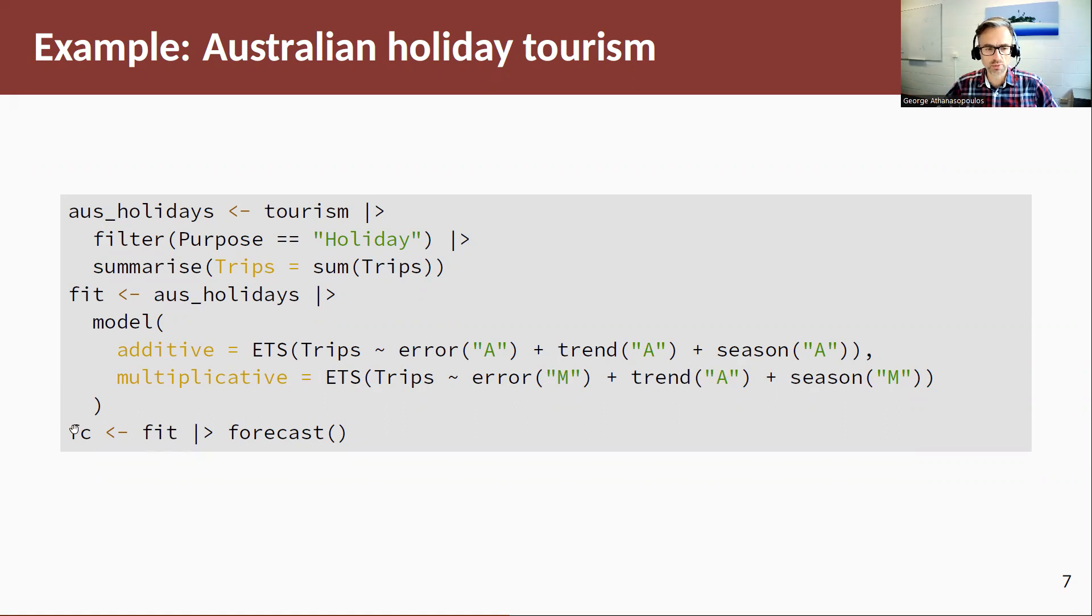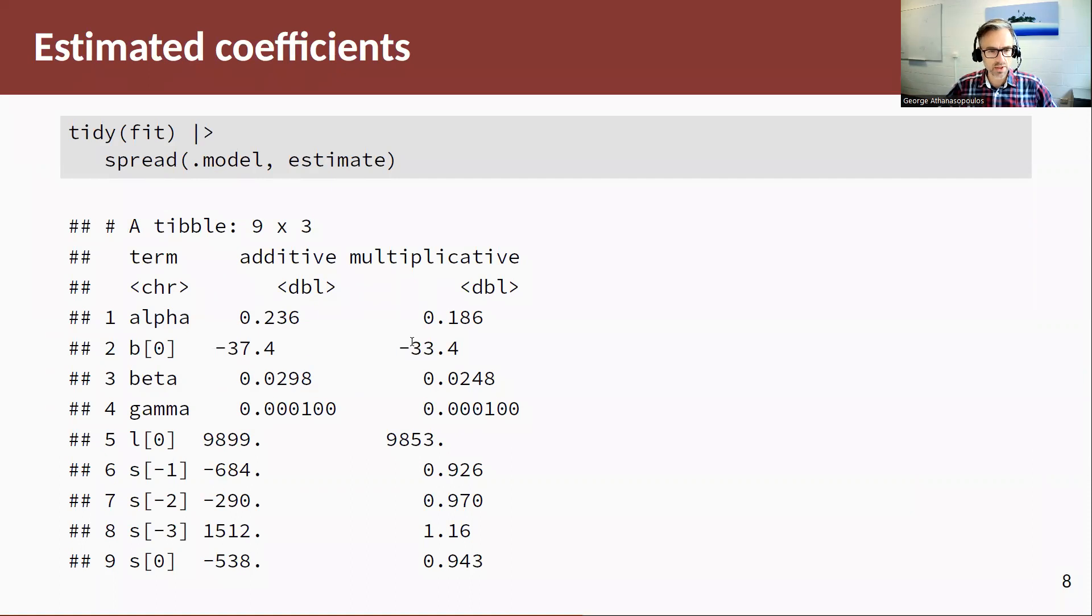So once we estimate those models, we're going to generate some forecasts. Let's have a look at some estimation outputs. Here we have the two models. We use the tidy function to have a look at the two methods. The first column here is the additive Holt-Winters. The second column is the multiplicative Holt-Winters. Not much difference in the smoothing coefficients, alpha, beta, and gamma. We have the initial states of B naught here and L naught. The thing that I want to draw your attention to is the seasonal component, the difference between an additive seasonal component and a multiplicative seasonal component. So absolute seasonality, relative seasonality.